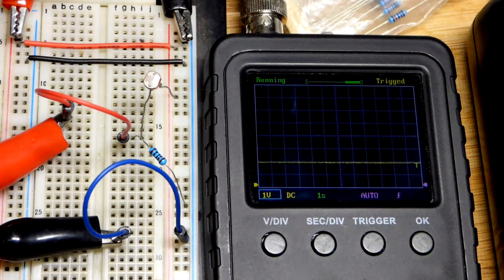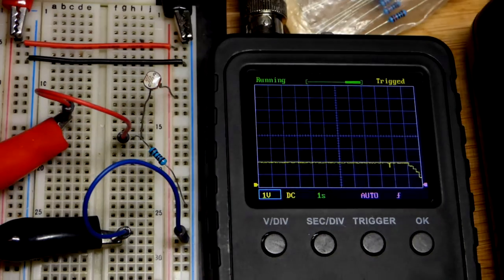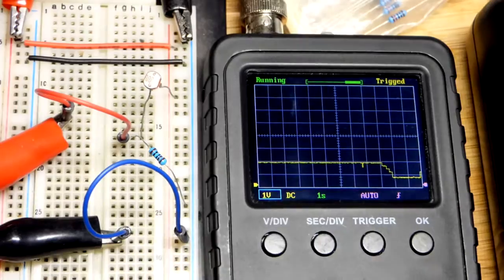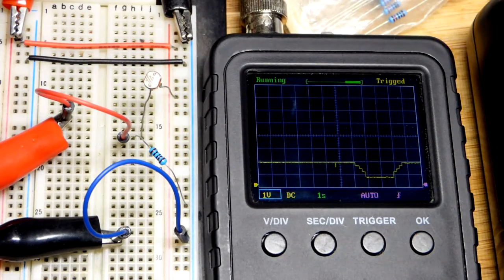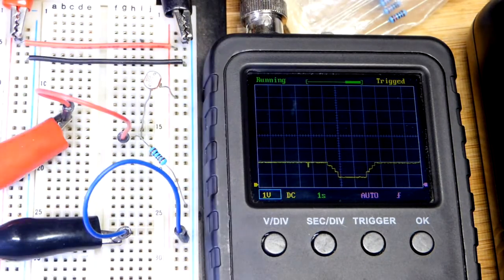So now in an earlier video, we had the light dependent resistor there. It's wired basically as a light sensor. As you can see there, it got dimmer, the voltage went down, it got brighter, the voltage went up.